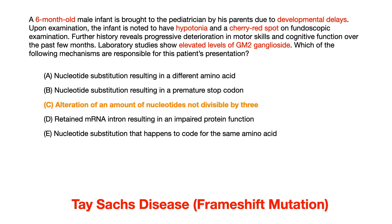The question asks which of the following mechanisms are responsible for this patient's presentation. All of these answer choices — A, B, C, D, and E — describe different types of DNA mutations without giving you the name. The correct answer is choice C: alteration of an amount of nucleotides not divisible by three, which describes a frameshift mutation. Let's go through the incorrect answer choices and connect each description to the type of DNA mutation it represents.